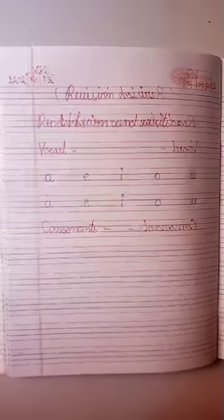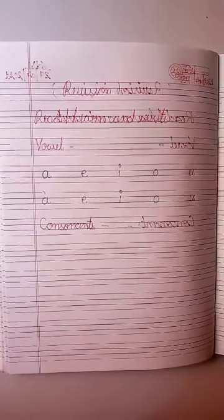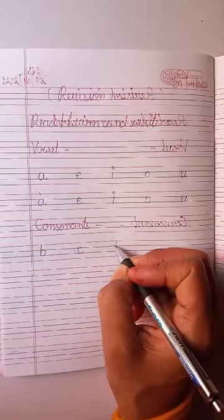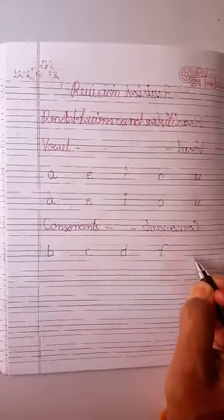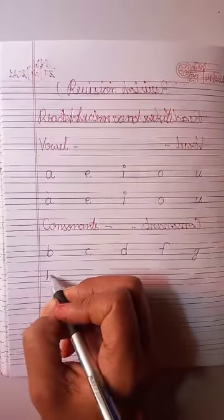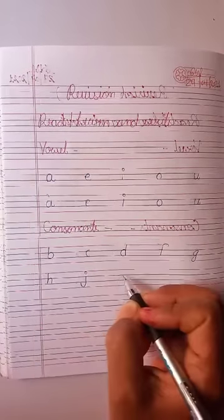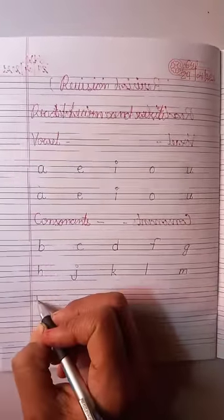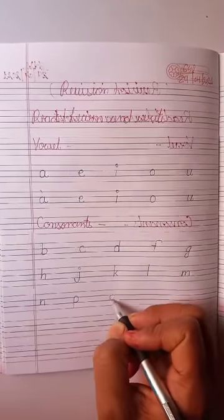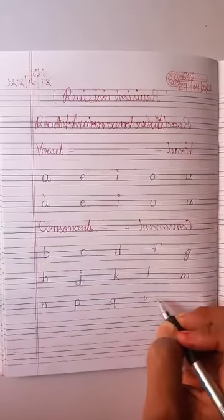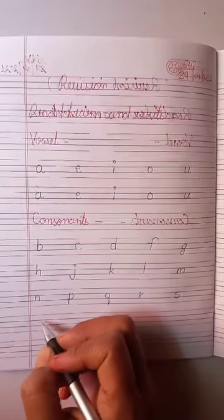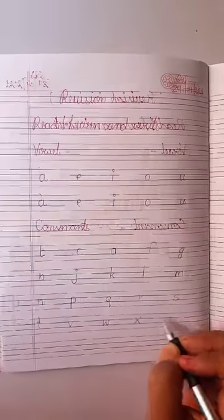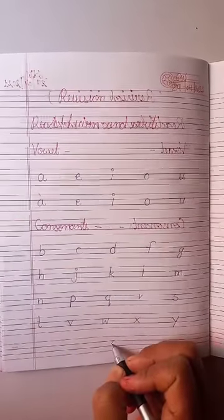Write consonants. How many consonants? There are 21 consonants. Write: B, C, D, F, G, H, J, K, L, M, N, P, Q, R, S, T, V, W, X, Y, and Z.